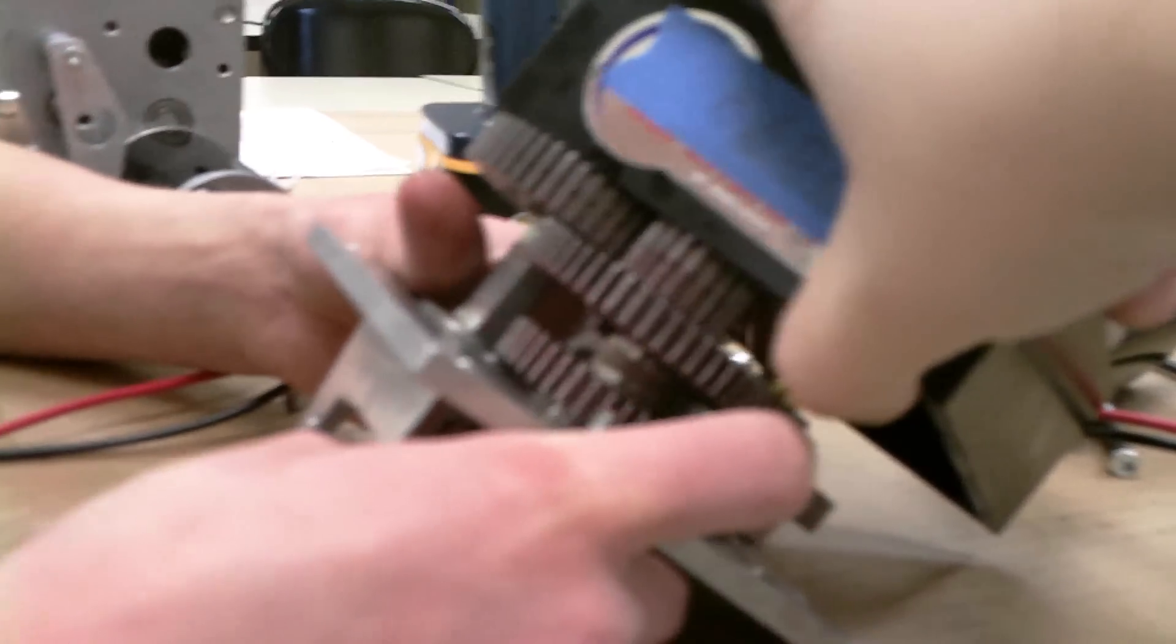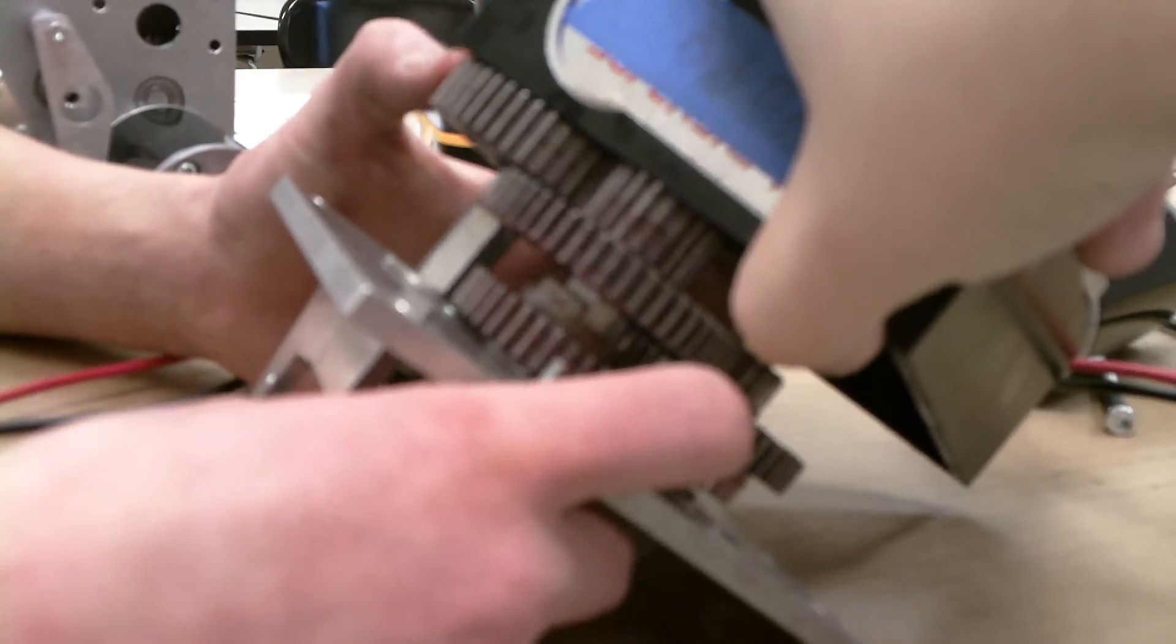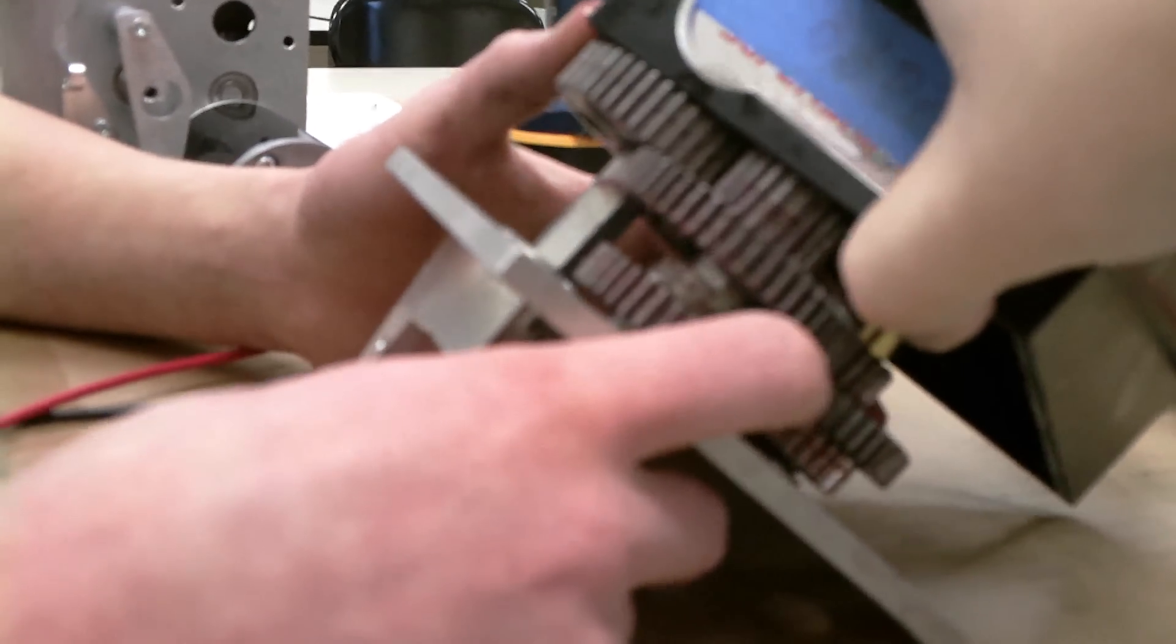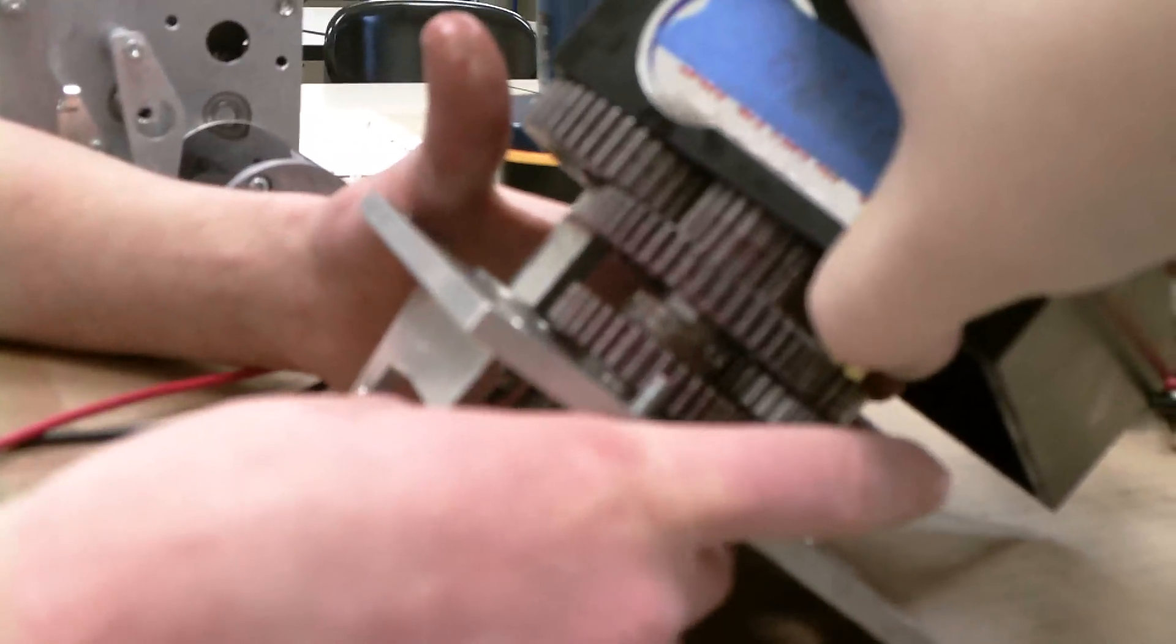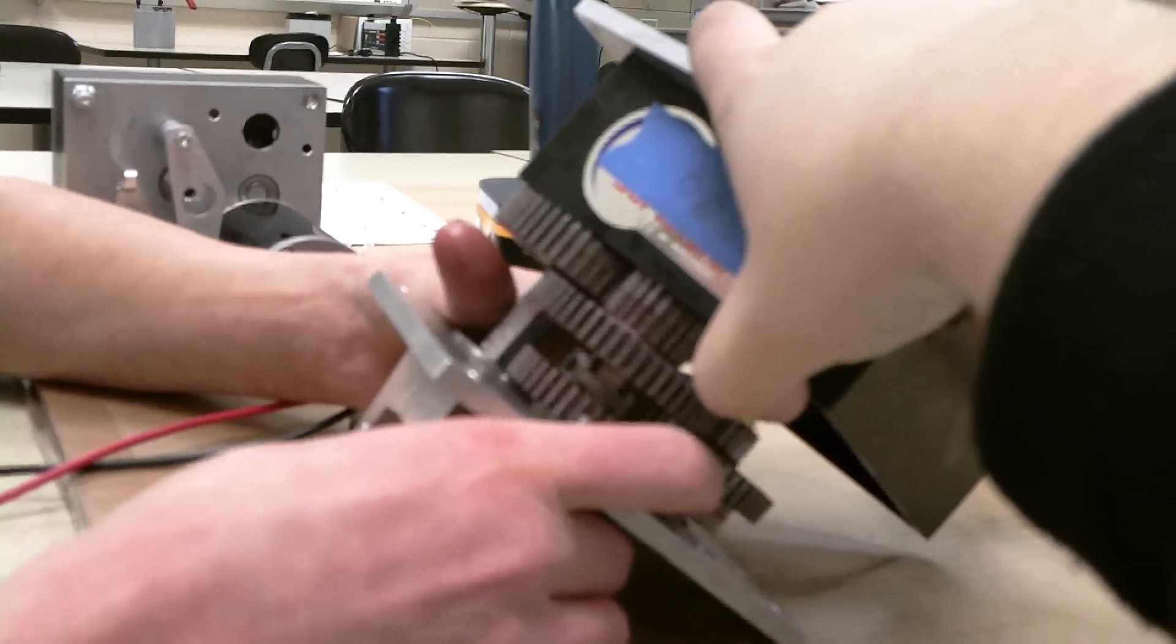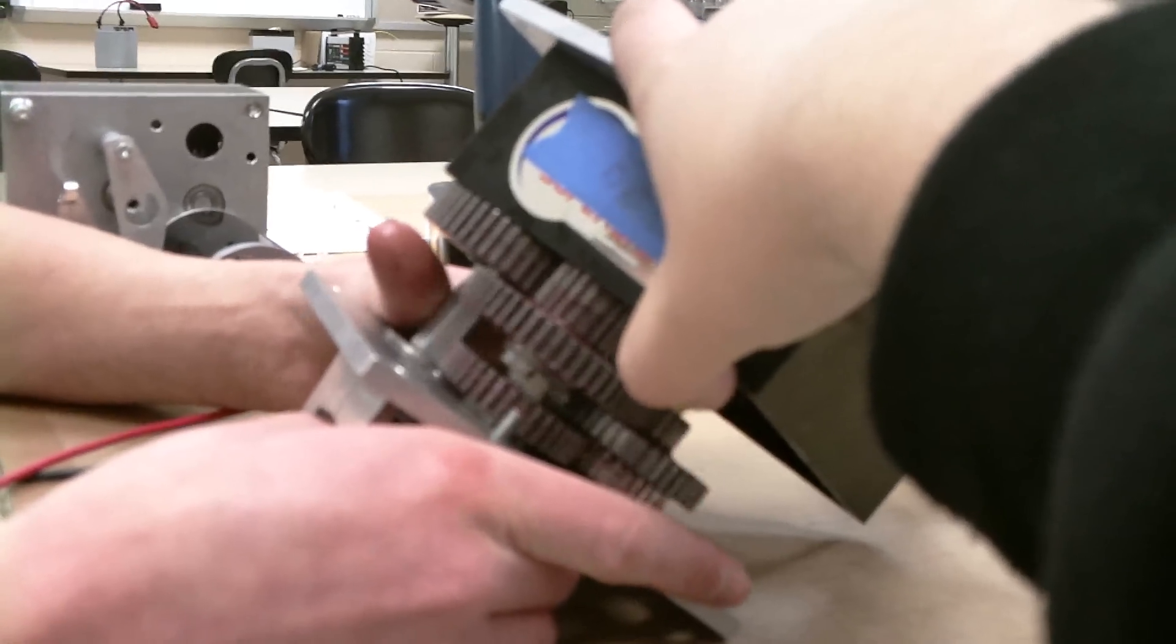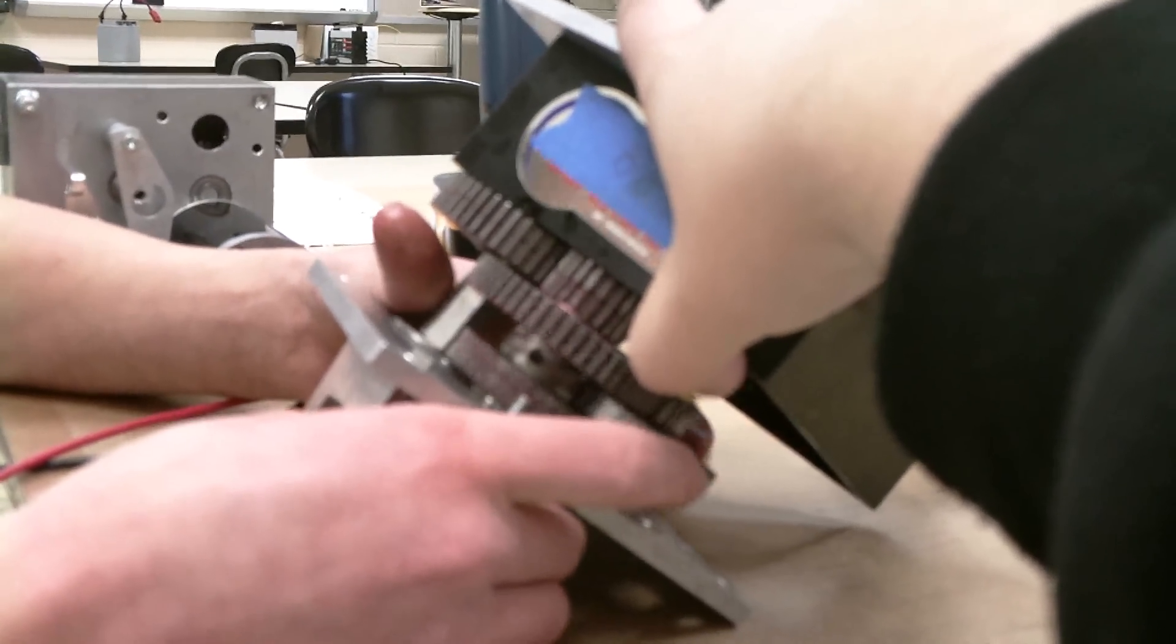If you notice when I change between the high-speed, this output gear right here, which leads to the output shaft for the sprockets, changes from spinning a little faster to now slower. I think that's really good.